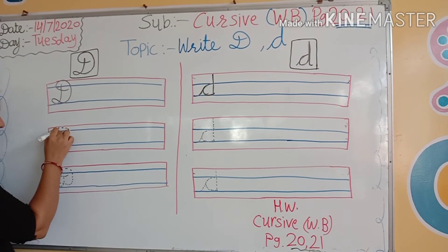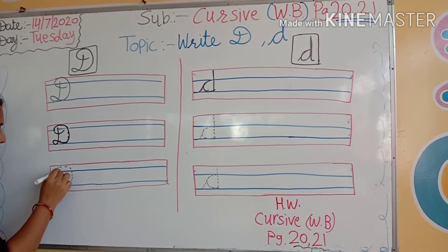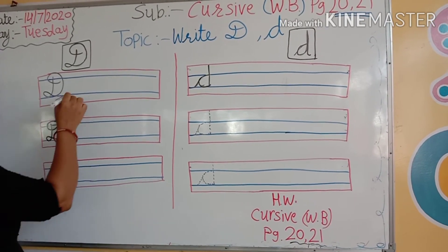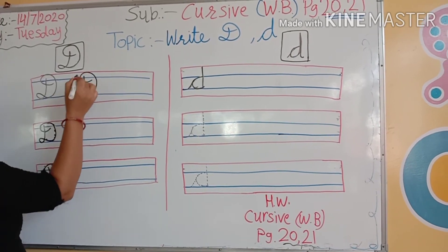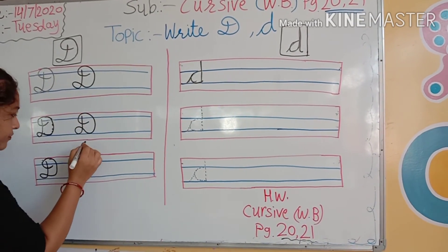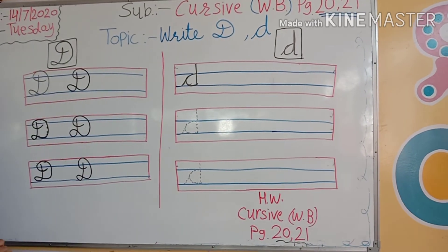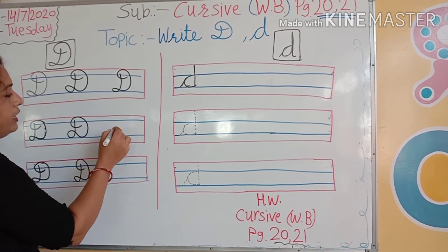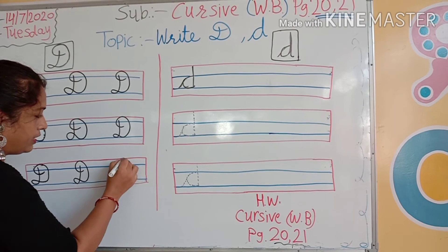First of all we will write capital D. We write on the dots. Capital D. Again we will write here without dots. Capital D. Again we will repeat capital D. Now again we will write here capital D. Kids, you have to write down with me in your cursive workbook. Capital D.